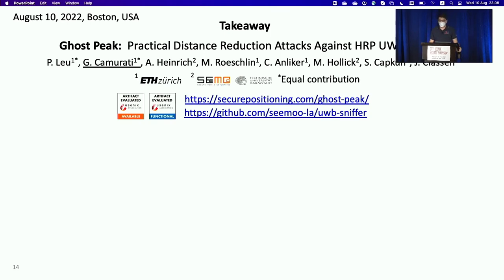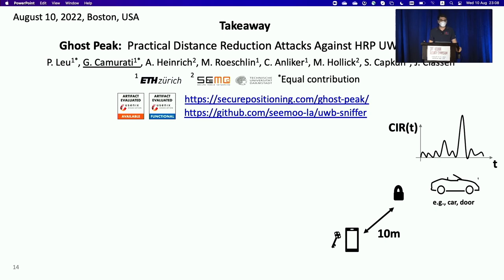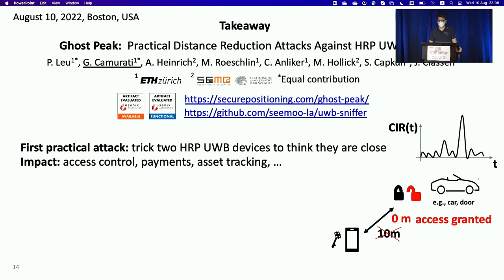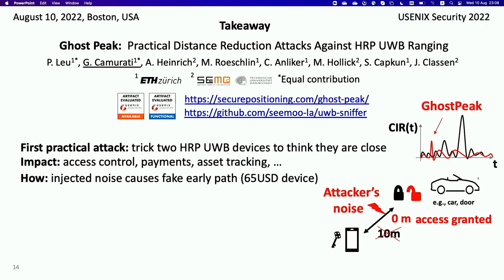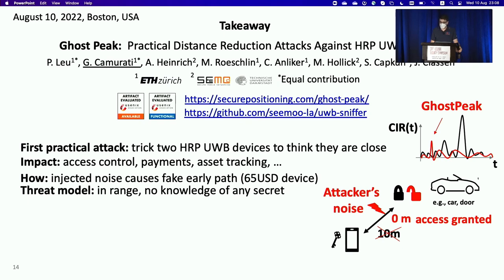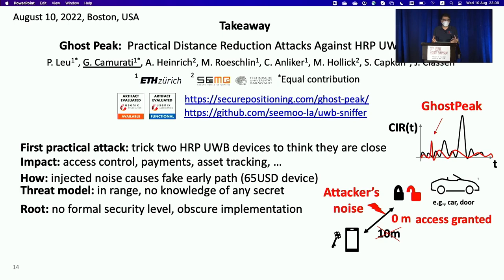The takeaway is that we looked at devices that use distance measurements for security applications like access control. We showed the first practical attack that tricks them into measuring a shorter distance so that an attacker can gain access. We do that by injecting noise on the channel, which generates a fake ghost peak and reduces the distance. In our threat model, we don't need any cryptographic secret — we just need to be in range of the victims with a standard device. The root cause is the lack of formal security analysis and the proprietary implementations of HRP. We demonstrated our attack on the U1 chip and found at least another commercial implementation to be vulnerable.